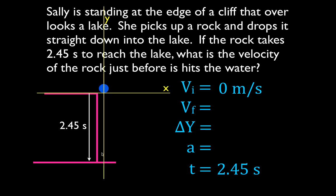We also know the acceleration is 9.81 meters per second squared for free fall — that is the acceleration due to gravity, a constant for free fall. Because the ball is falling down and accelerating in the negative direction, we put a negative sign in front: negative 9.81 meters per second squared. It's important to keep the negative and positive signs straight. We are trying to find the final velocity; we're not given the change in position, so I put a dash there — we're not going to use that.